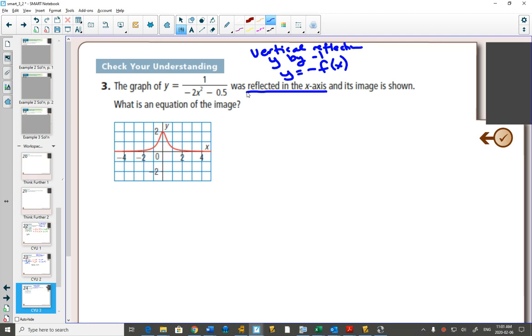The negative is outside. Here is the original equation. If we want negative f of x to be our reflection graph, our new equation will be negative whatever our original equation was. Inside, what was our original equation? It was 1 over negative 2x squared minus 0.5. You could leave your answer like that and you would be done.